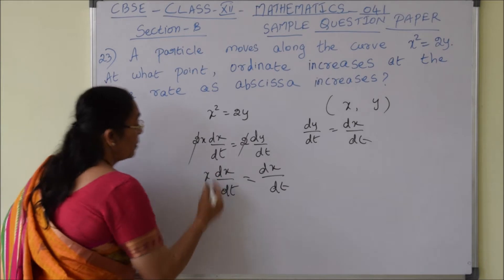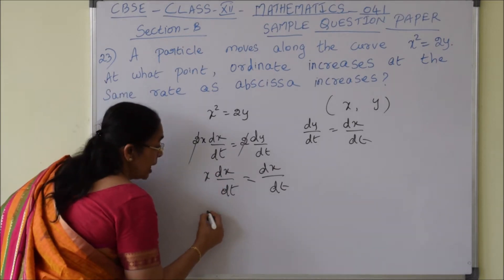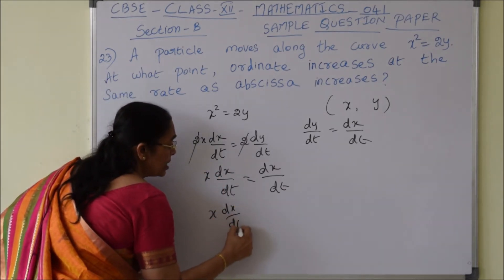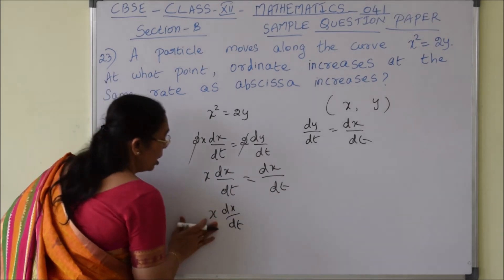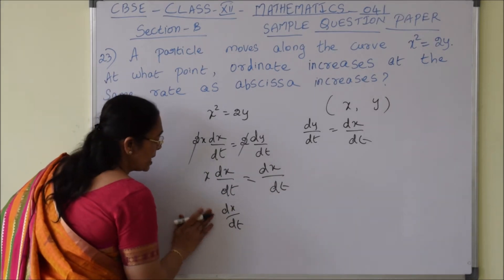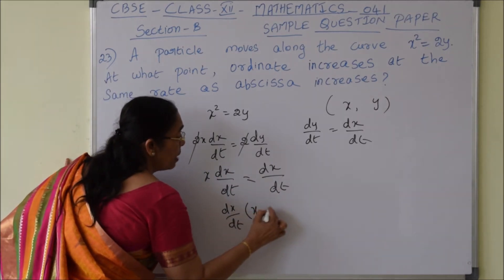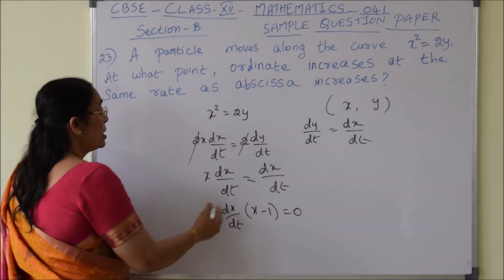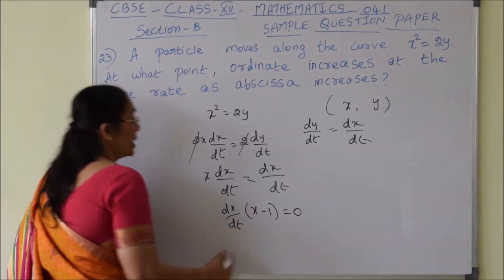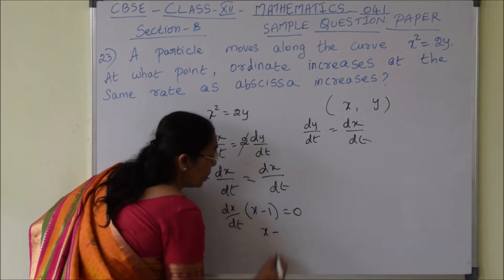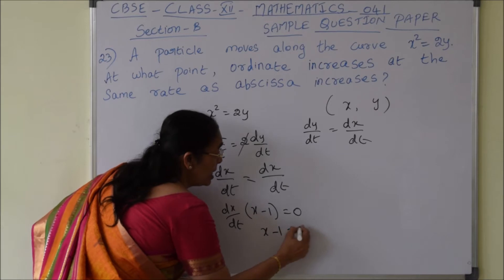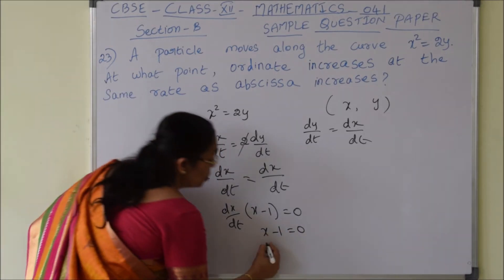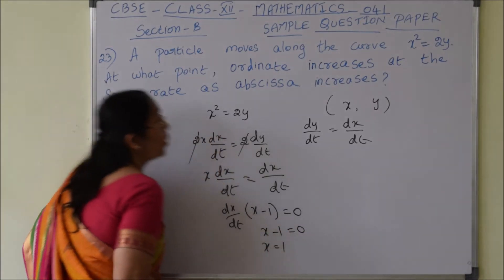After cancelling 2, we get x into dx/dt equals dx/dt, which gives dx/dt times (x minus 1) equals 0. Since dx/dt cannot be 0, this implies x minus 1 equals 0, so x equals 1.